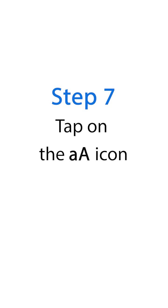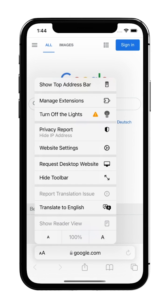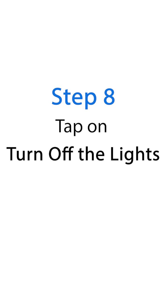Step 7: Tap on the AA icon. Step 8: Tap on Turn Off the Lights.